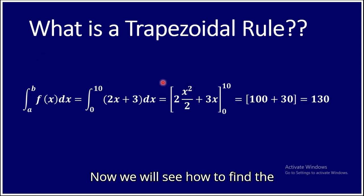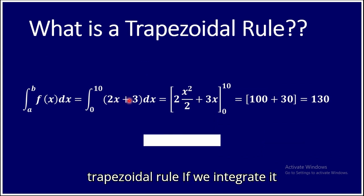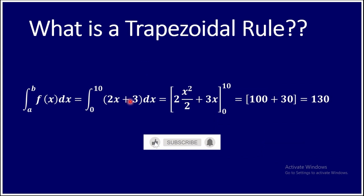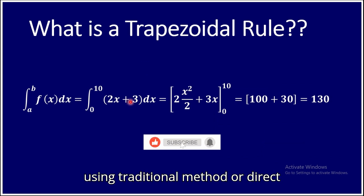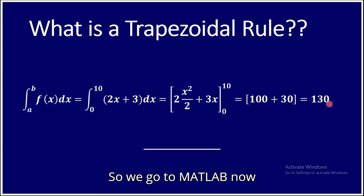Now we will see how to find the integration of 2x + 3 using the trapezoidal rule. If we integrate it using the traditional method or direct integration, we will get the value of 130. So we will go to MATLAB now.